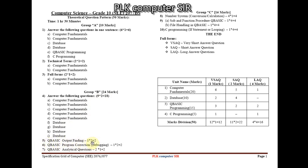Question 5 is Q Basic output finding: 1 question × 2 marks = 2 marks, from modular programming or file handling — you have to trace the output using a dry run. Question 6 is Q Basic program correction (debugging): generally 4 mistakes, 1 question × 2 marks = 2 marks.